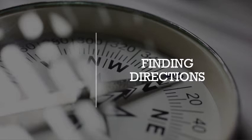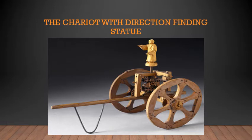You might have read many interesting stories about the uses of magnets. One such story is about an emperor in China named Hong Ti. This story is about his chariot, which you can see on the screen. It is said that he had a chariot with a statue of a lady that could rotate in any direction.